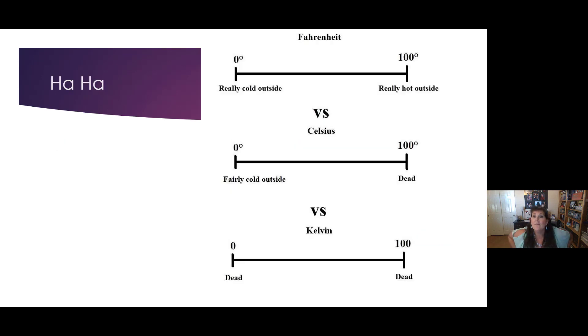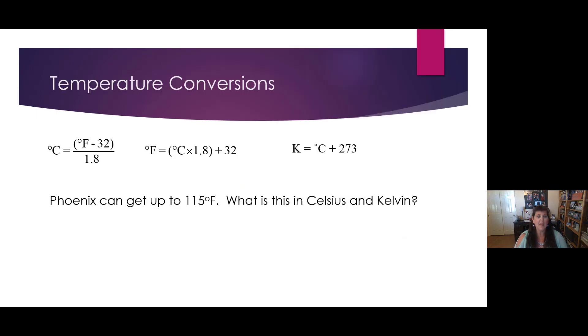This is just for fun. For Fahrenheit, zero degrees is really cold outside, and 100 degrees is really hot outside. For Celsius, zero degrees is fairly cold outside, and 100 degrees Celsius, you're dead. In Kelvin, zero degrees Kelvin, you're dead. 100 degrees Kelvin, you're dead. That's just being silly. All right, so temperatures.